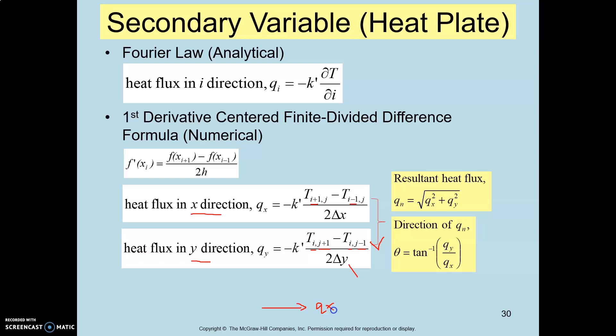From here you basically obtain the heat flux in X direction and Y direction. By doing this, you should be able to obtain the resultant. The resultant is taking the square root: heat flux in X direction squared plus heat flux in Y direction squared. This is actually the magnitude of the heat flux in 2D.